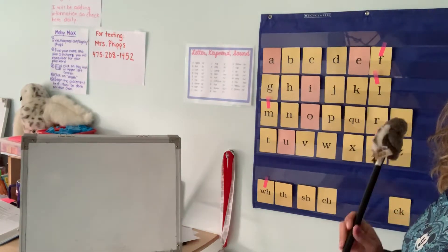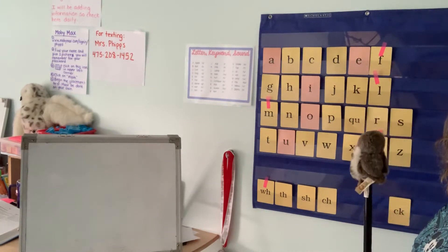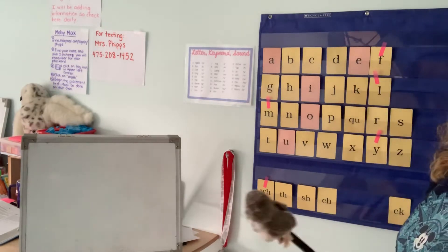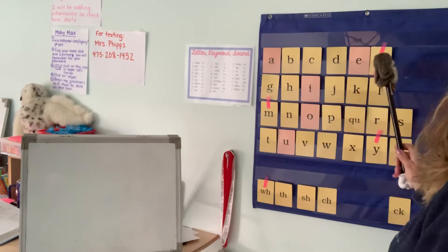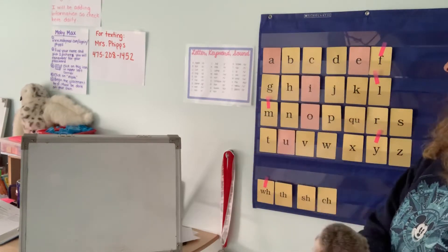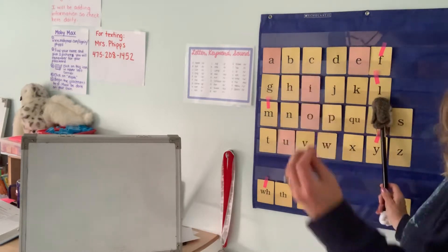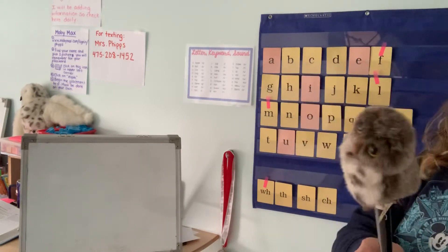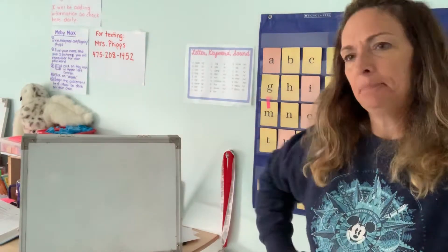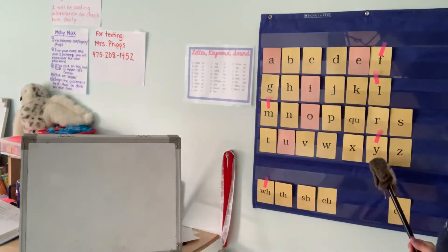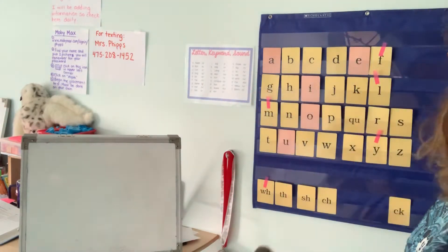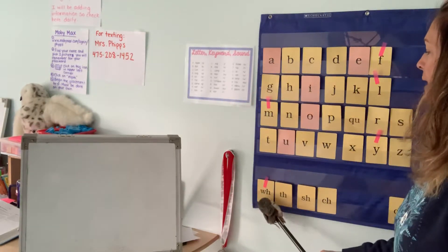I'm going to do the letters with the pink tags. Here we go. You're going to echo after me. Remember, my turn. F, fun. L, lamp. M, man. Y, yellow. W-H, whistle.